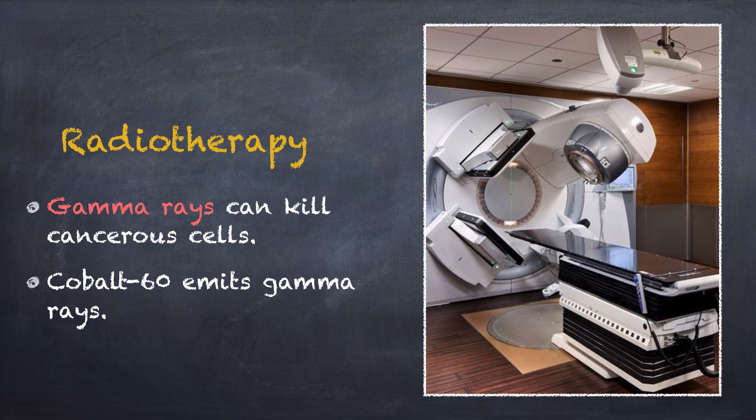Cobalt-60, a radioisotope that emits gamma rays, is used in radiotherapy to kill cancerous cells. Its use is strictly controlled as gamma rays are very dangerous to humans. Cobalt-60 is stored in a lead container.